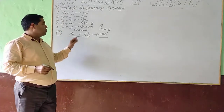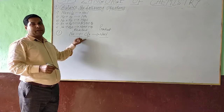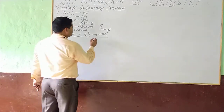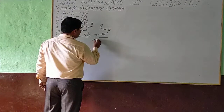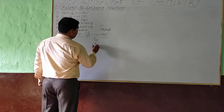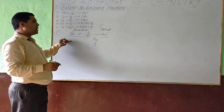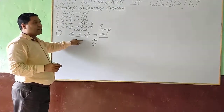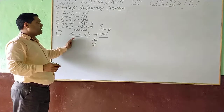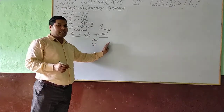The second point: we have to see the elements present in the chemical equation. Here you see the elements are sodium and chlorine. Now the third step — we have to count the number of atoms present in each element on the reactant side and the product side.